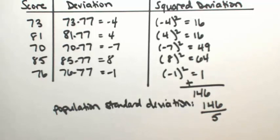If you were doing a sample standard deviation, you wouldn't divide by 5. You would do 5 minus 1. Because it's a little bit off. So we have to modify it a little bit.